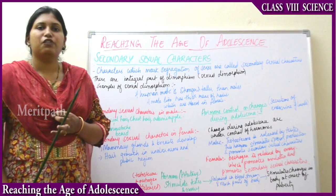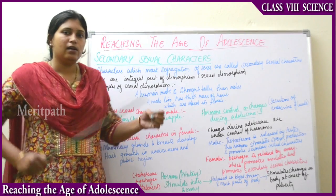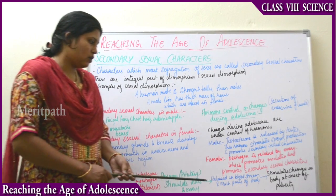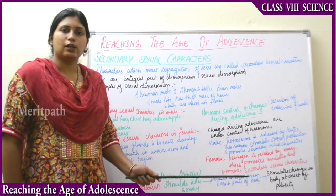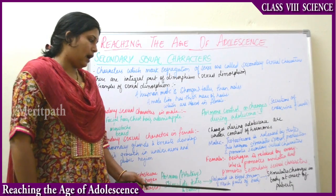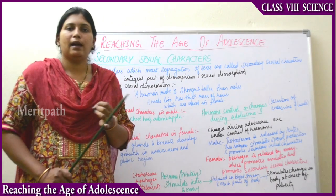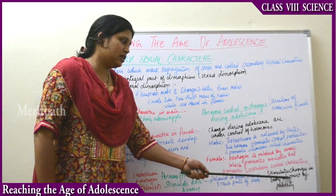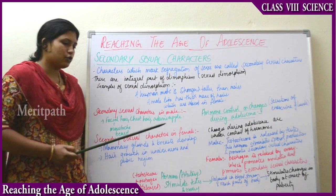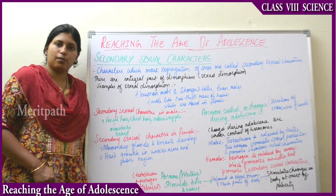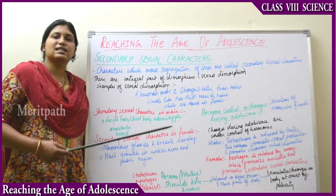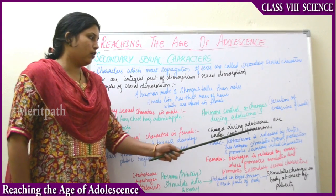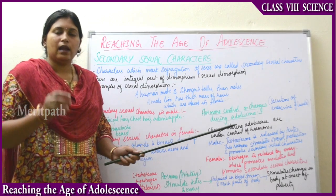The pituitary gland stimulates the testis — the male reproductive part — and the ovary — the female reproductive part. When the testis is stimulated, it releases testosterone, and when the ovary is stimulated, it releases estrogen. These hormones go into the bloodstream and via blood reach the specific parts of the body, where they stimulate changes at the stage of puberty. Changes during adolescence are under the control of testosterone hormone in males and estrogen hormone in females.